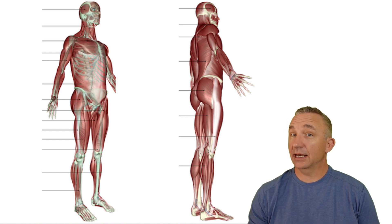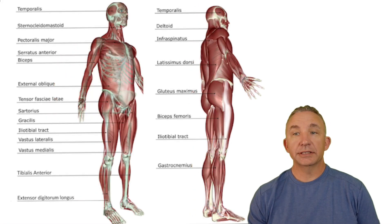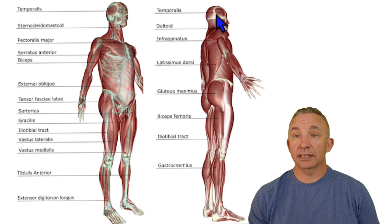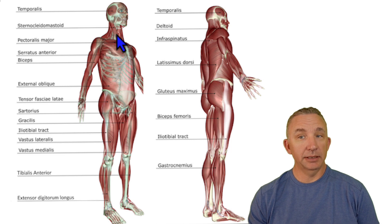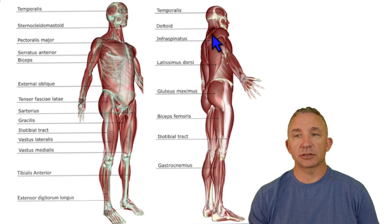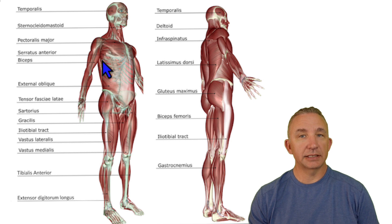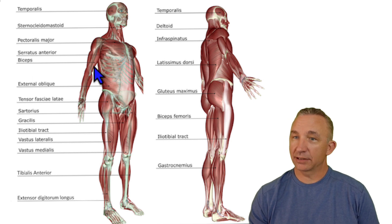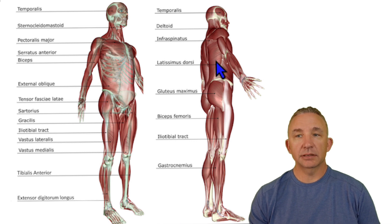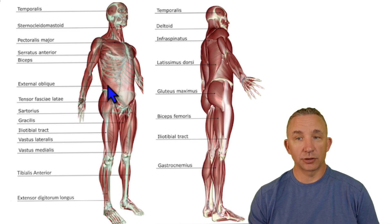Now let me show the key and see how well you did. Running through them again: temporalis; major neck muscle sternocleidomastoid — we went a little deep because we took away the platysma; shoulder, deltoid; underneath that, infraspinatus; major chest muscle, pectoralis major; going down from there, serratus anterior; biceps brachii, with a long head and a short head; major back muscle, latissimus dorsi; and to the abs, the most superficial being external oblique.